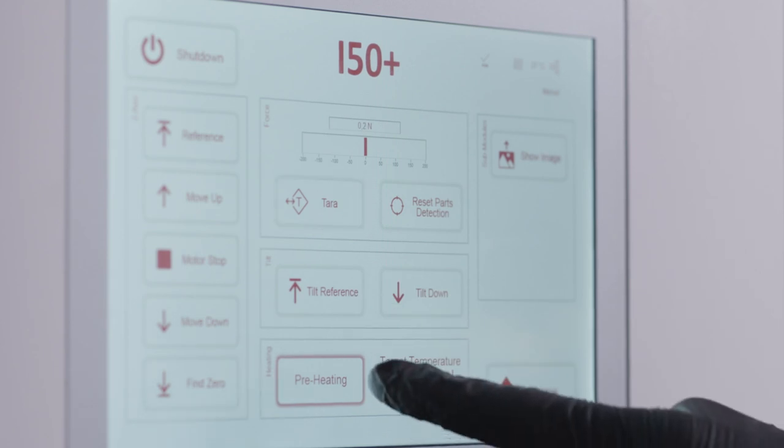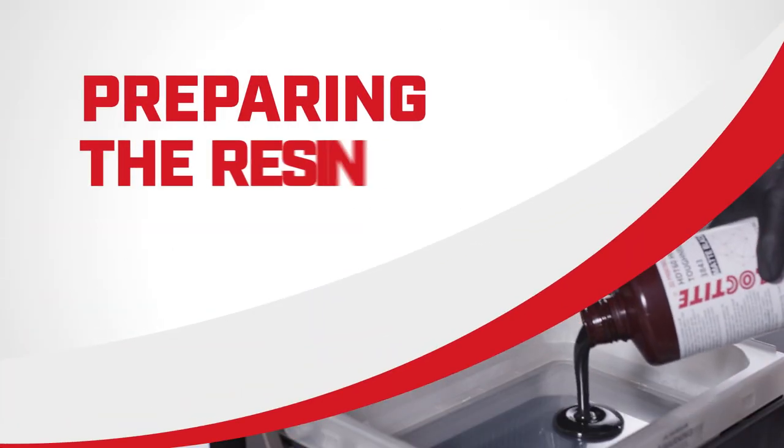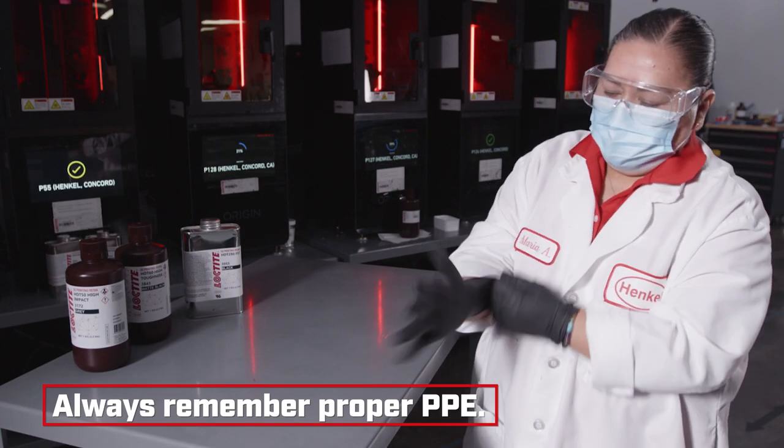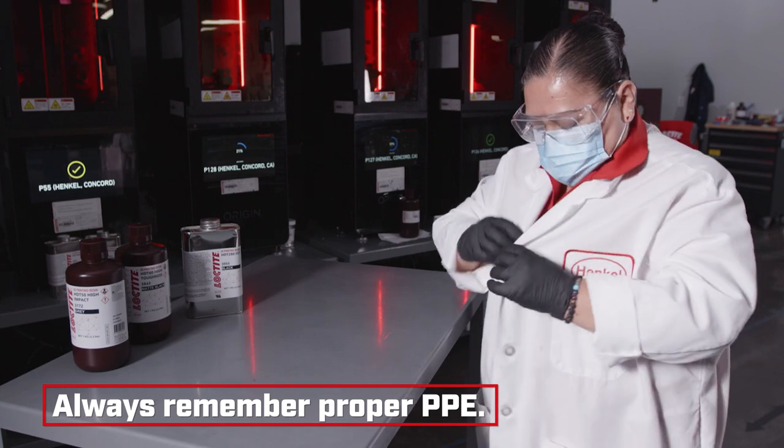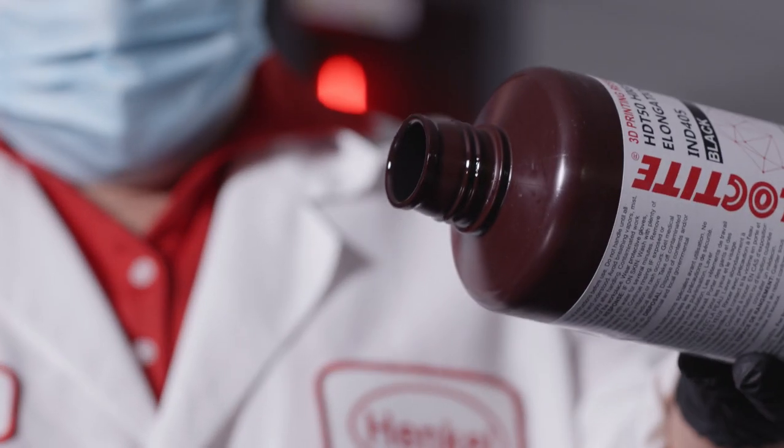Now that the printer settings are adjusted, the next step is to prepare the material. It is recommended to wear proper safety equipment before handling any material. Prepare the resin and begin to pour it into the build tray.